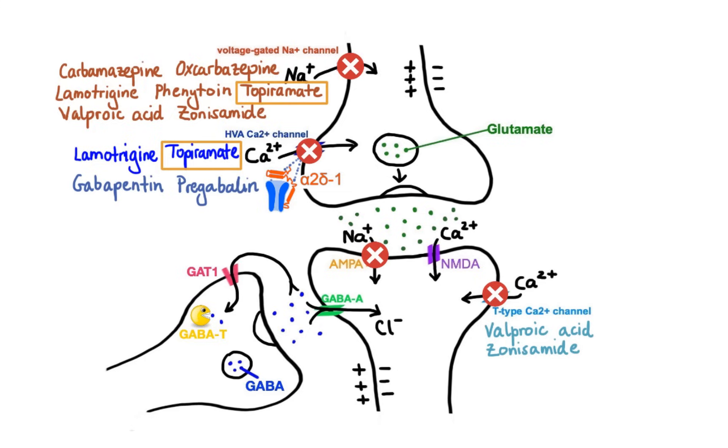Because the presynaptic channels that contain this specific subunit appear to modulate the release of excitatory neurotransmitters, such as glutamate, inhibition of alpha2delta1 containing calcium channels by gabapentin and pregabalin is speculated to be one of the main reasons for their antiepileptic effect.